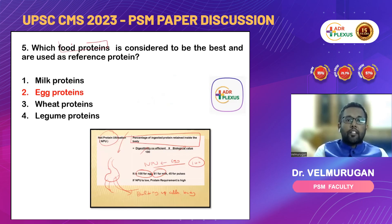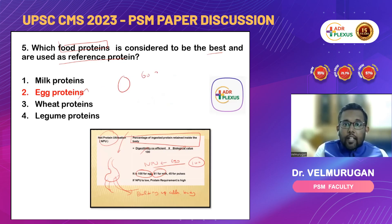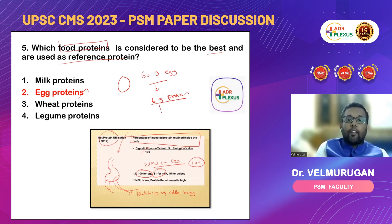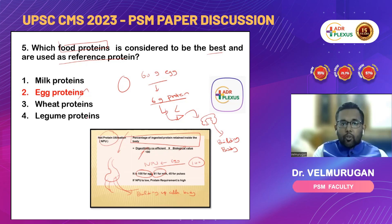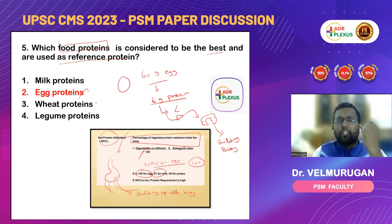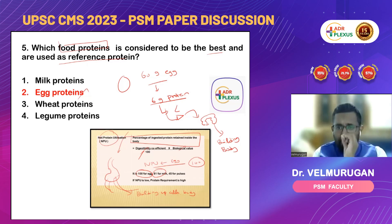Next question: which food protein is considered the best and used as a reference protein? Egg protein. A 60-gram egg gives 6 grams of protein, and the specialty is that if you take this 6 grams of protein, all of it will be absorbed by the intestine and used for building up the body. The net protein utilization — which is digestibility coefficient multiplied by biological value — comes to 100 for egg. So egg is used as a reference protein, and we compare all other proteins against it.